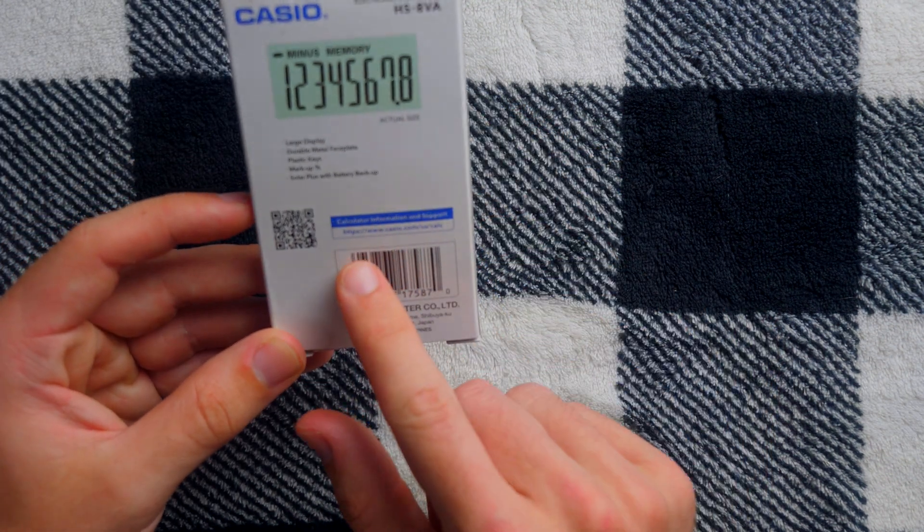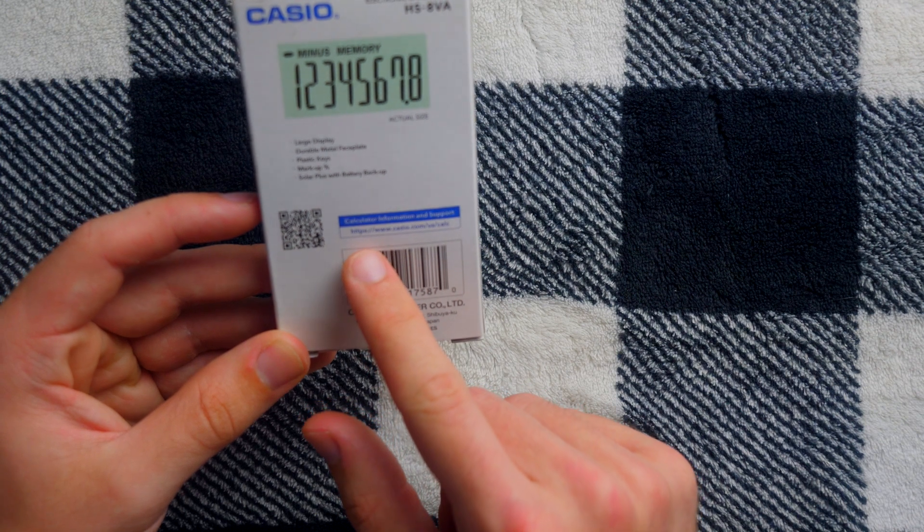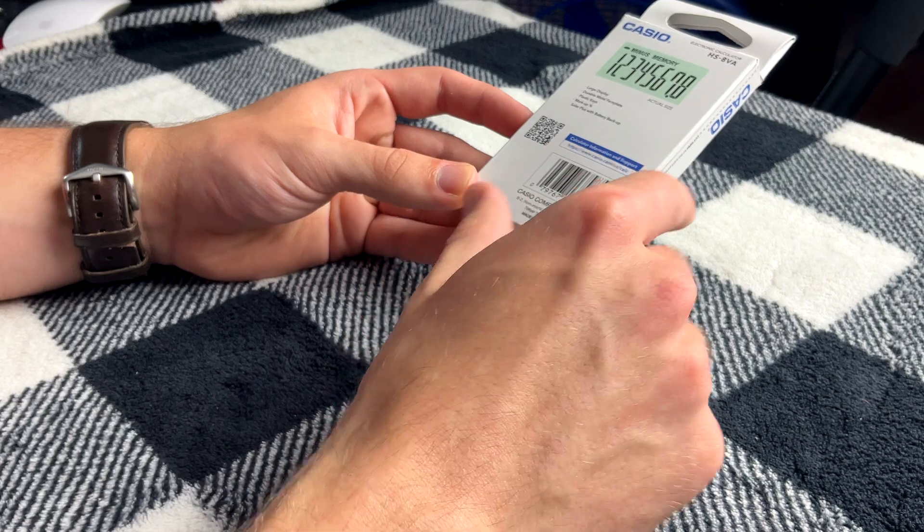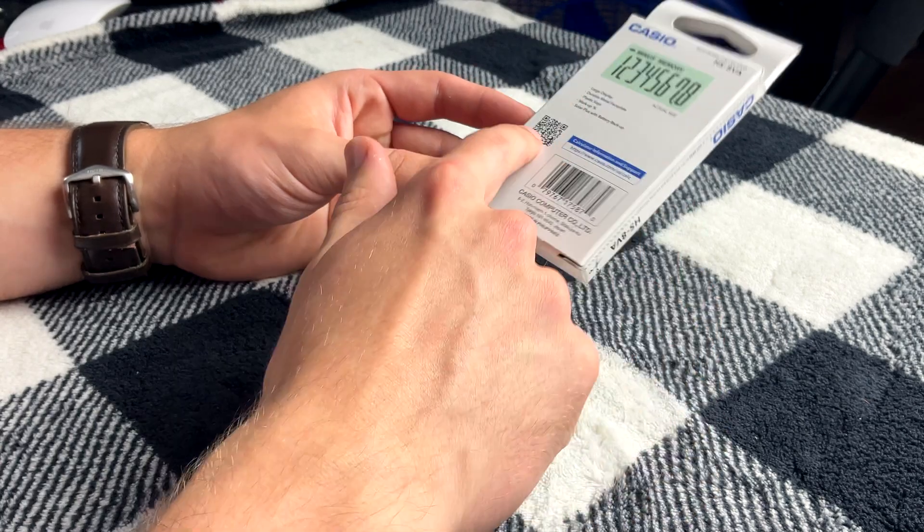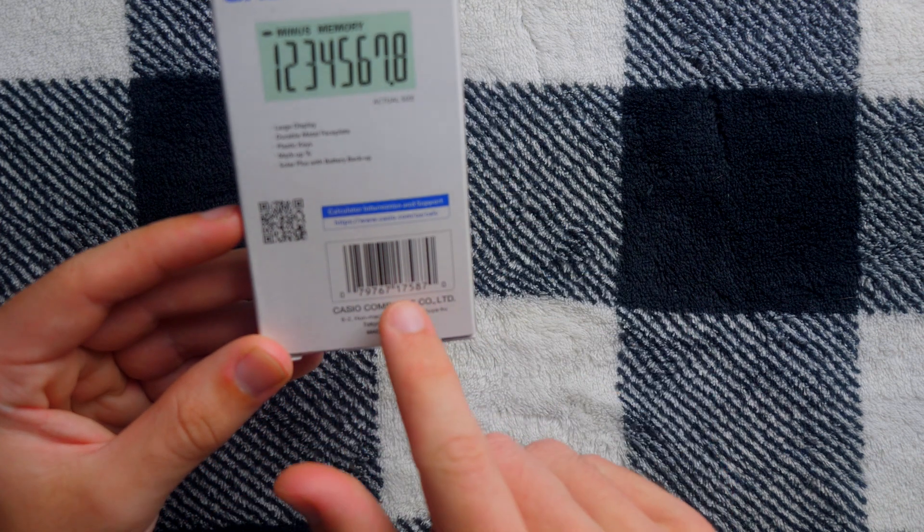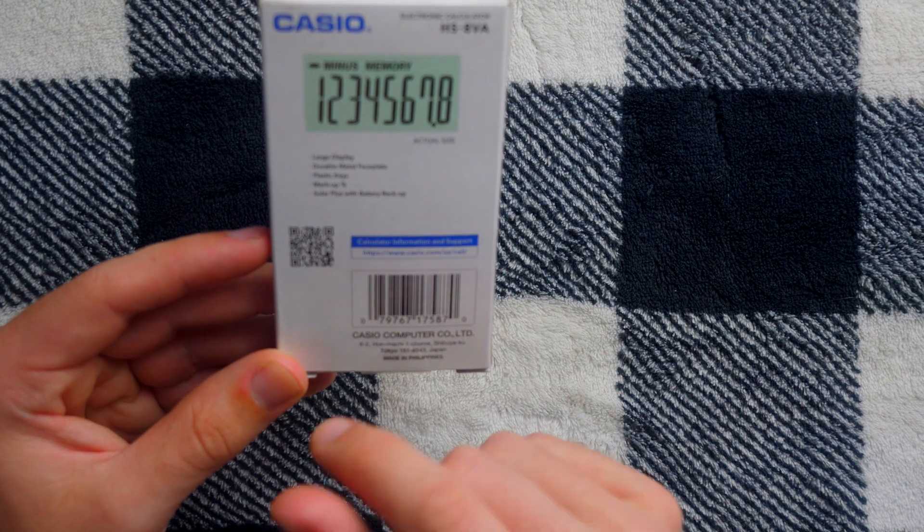Calculator information and support. We can go to https://www.casio.com/US/calc. You can scan that QR code if you want. I'm not going to bother.